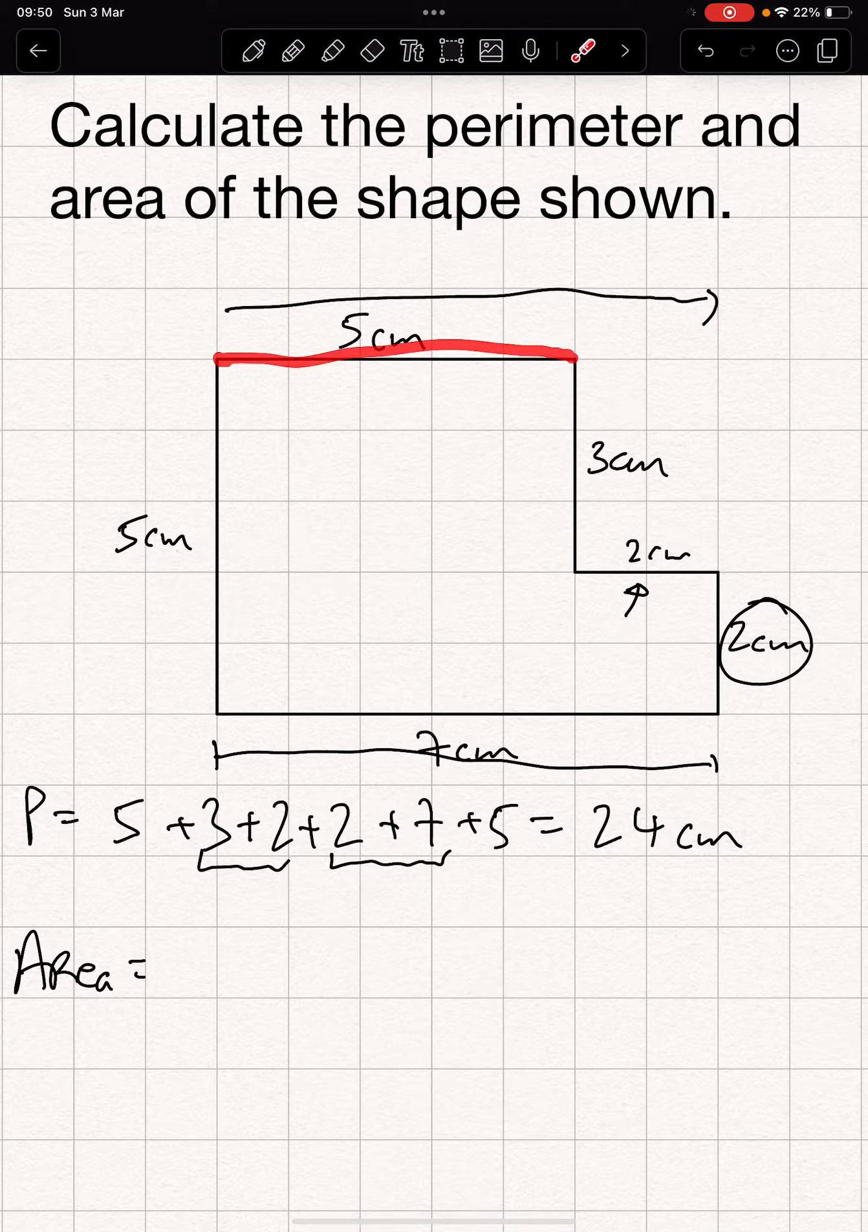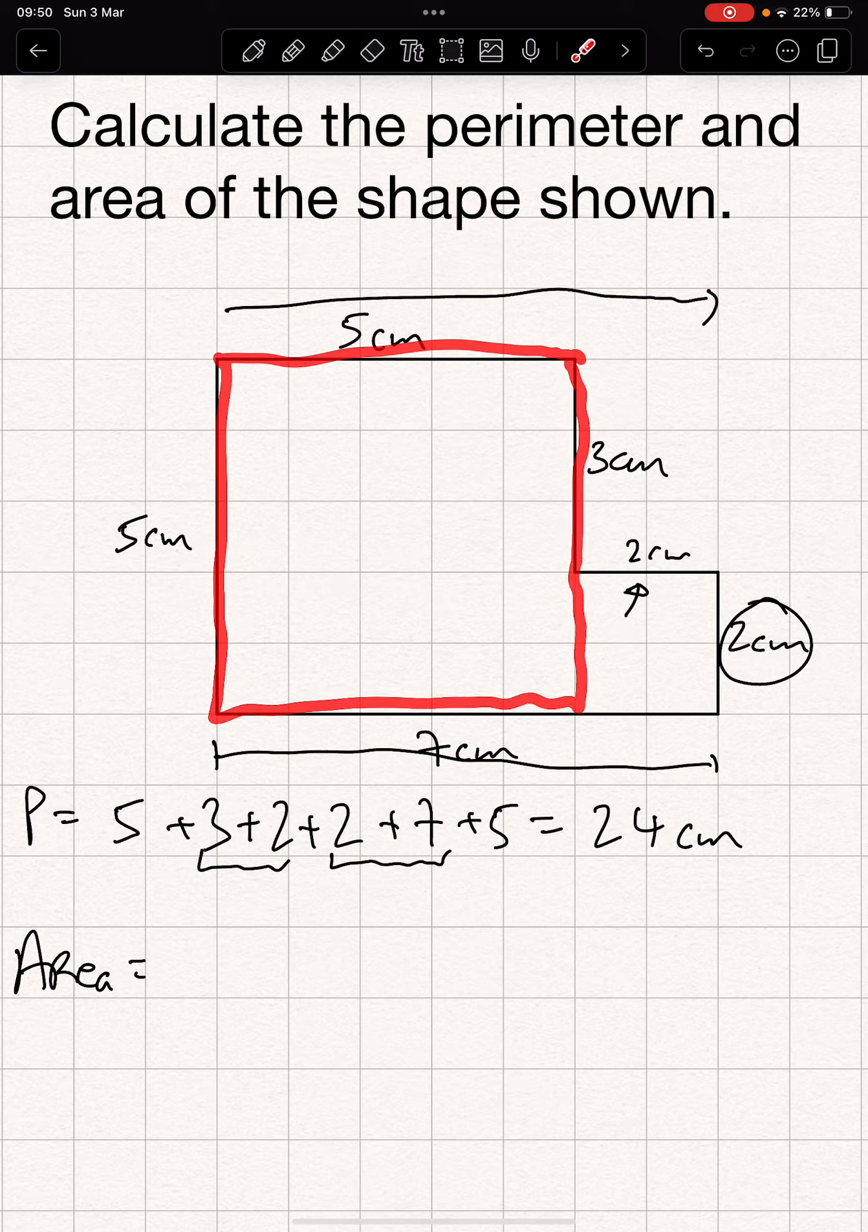This is a side of 5, and down here is a side of 5. So we take this as one box, get the area of that box.